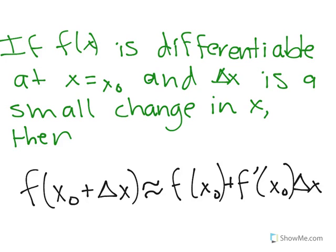So if you have some f(x) that is differentiable at x naught, where x naught is just a point in the function where x is equal to x naught, and delta x is a small change in x, then you can actually approximate f(x naught + delta x) to be f(x naught) + f'(x naught) times delta x.